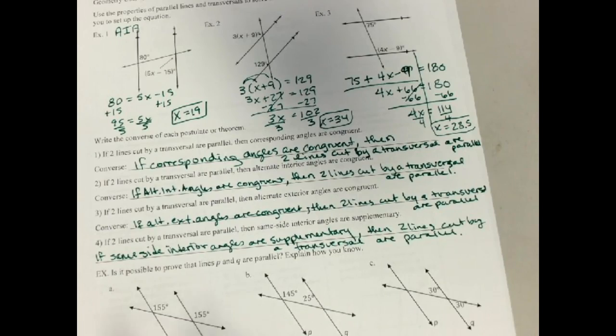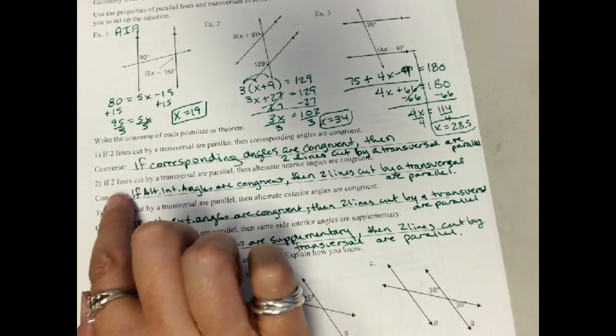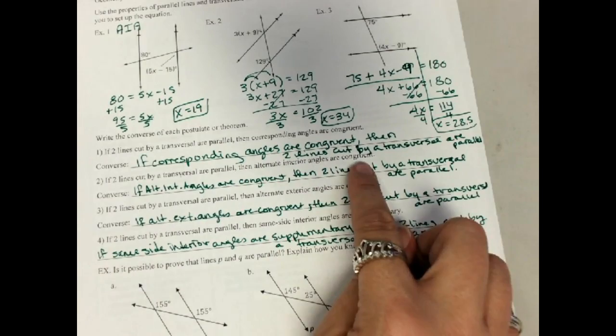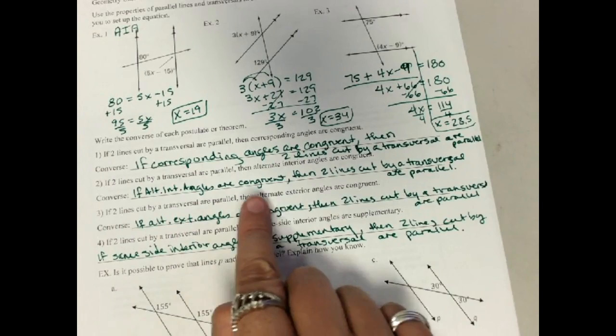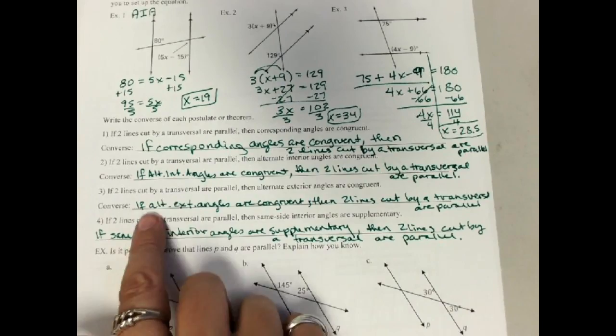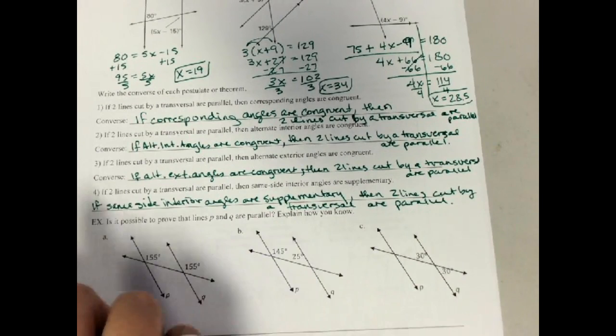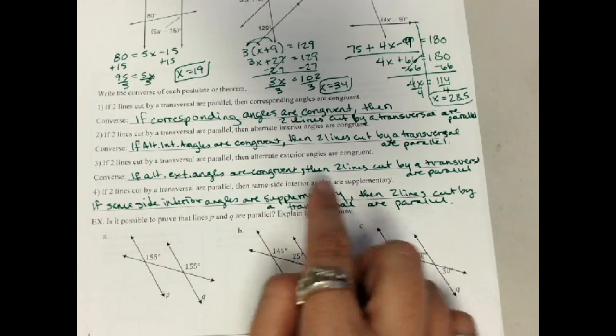So you should have paused the video and written the converse of each one. So if two lines cut by transversal are parallel, then alternate interior angles are congruent, and the converse is also true. If the alternate interior angles are congruent, then the lines are parallel. So if two lines are parallel, their alternate exterior angles are congruent, the converse is also true. If the alternate exterior angles are congruent, then I know the lines are parallel. And finally, if the lines are parallel, the same side interior are supplementary, and the converse is true. If the same side interior are supplementary, then the two lines are parallel.